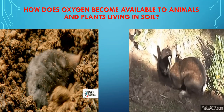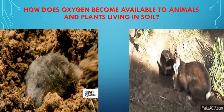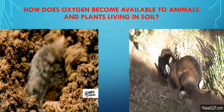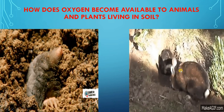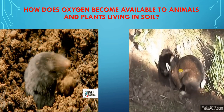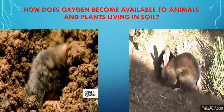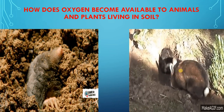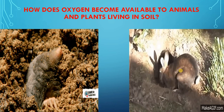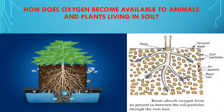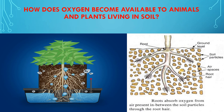Many animals live in soil — they dig burrows and holes deep into the soil. Here you can see this is a rat and this is a rabbit — these are burrowing animals, rodents. These burrows and holes also make spaces available for the air to move into the soil so that it can be used to obtain oxygen by the animals living there. We know that roots of land plants grow in the soil, and soil has air in it. So the roots of plants get oxygen for respiration from the air present in the soil particles.